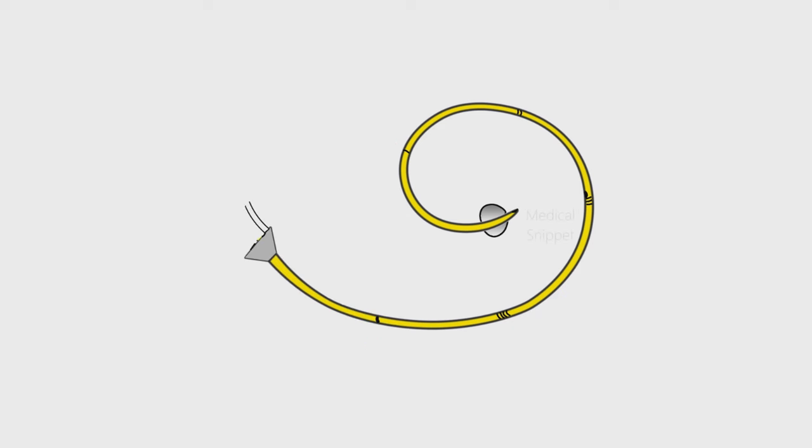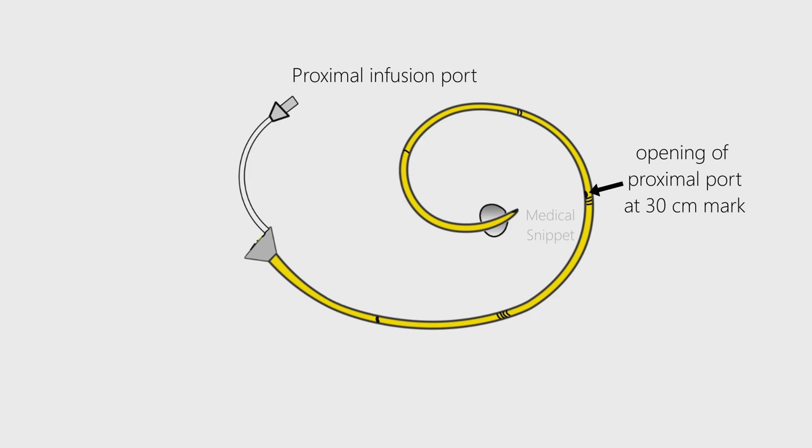Usually there are four ports in the PA catheter. First is the proximal infusion port; its lumen terminates 30 cm from the tip of the catheter. This opening lies in the right atrium when the tip is in the pulmonary artery.